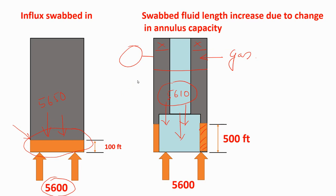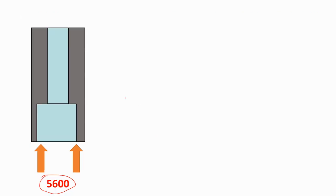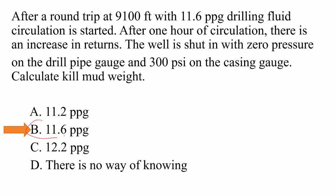Whenever we have a swab kick, the well control procedure is the driller method first cycle: strip back or run back to bottom, then circulate out the influx. We don't need kill mud weight in this case because the formation pressure is not changing, so we don't need to increase the hydrostatic head. When the influx is removed, the original hydrostatic pressure will be restored to 5700 psi. The answer is the same drilling mud — no kill mud needed. The key tip: whenever the drill pipe pressure is zero and you see a round trip, wiper trip, clear trip, or check trip, you must select the same mud weight.